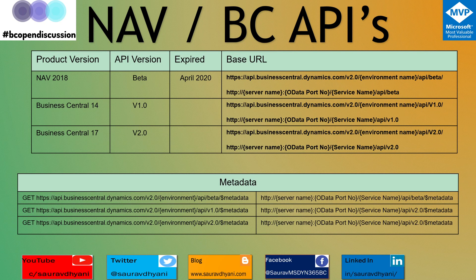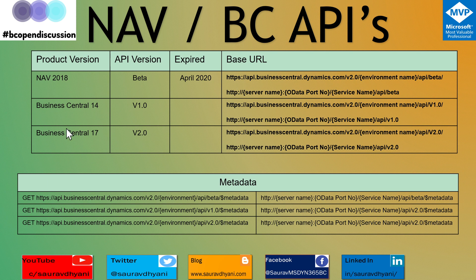In Business Central 17, Microsoft added five new system fields to every table: System ID, Created By, Modified By, Created DateTime, and Modified DateTime. These are platform-managed fields. From a platform perspective in Business Central 17 and higher, every record has a built-in system ID field.